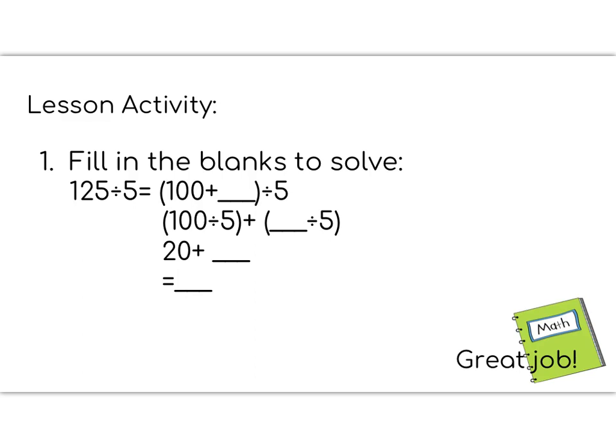So you can see that I've started this for you. I've broken down 125 into 100 and something. So we know that first blank is going to be 25, because 100 plus 25 equals 125. Then I've gone and I've divided 100 by 5. So now that means I need to divide my 25 by 5. Then I'm going to take those two products and add them together to get my total answer. I've gotten you started. You finish up the rest in your math notebook. Be prepared to show your teacher your solved problem. Great job on your flip lesson today.